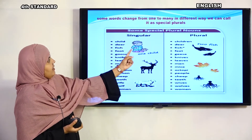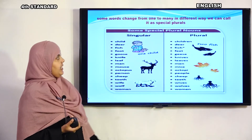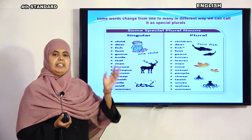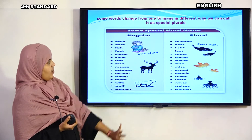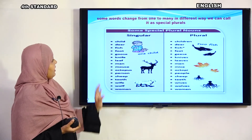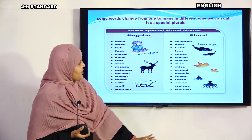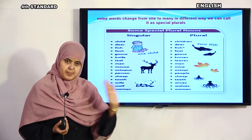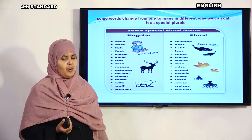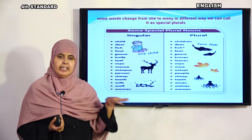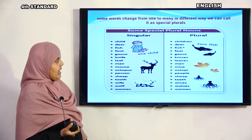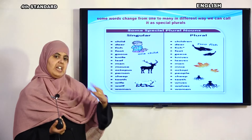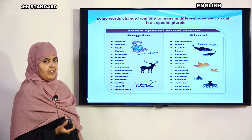Deer — deer. We don't add 's' — it stays the same. Fish — fish. We should not add 's' or 'es' for fish. One fish, two fish — the word stays the same. It is not 'fishes'.